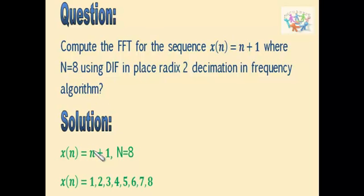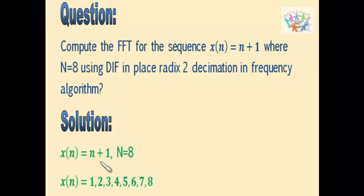The values of n will be from 0 to 7. Substituting n = 0 gives 0 + 1 = 1, n = 1 gives 1 + 1 = 2, and so on up to n = 7. So we get the sequence as 1, 2, 3, 4, 5, 6, 7, and 8.